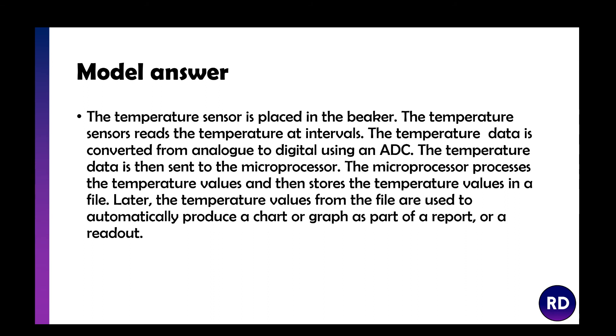An example. The temperature sensor is placed in the beaker. The temperature sensor reads the temperature at regular intervals. The temperature data is converted from analogue to digital using an ADC. The temperature data is then sent to the microprocessor. The microprocessor processes the temperature values and then stores the temperature values in a file. Later, the temperature values from the file are used to automatically produce a chart or graph as part of a report or a readout.